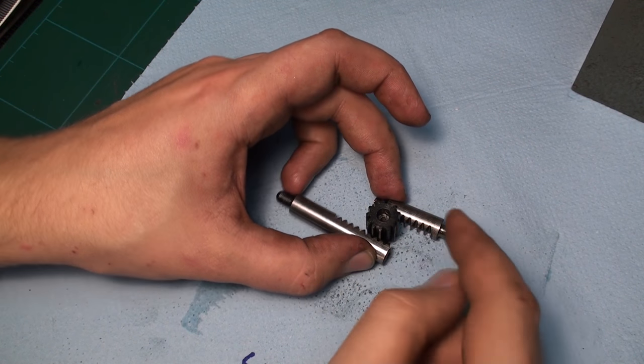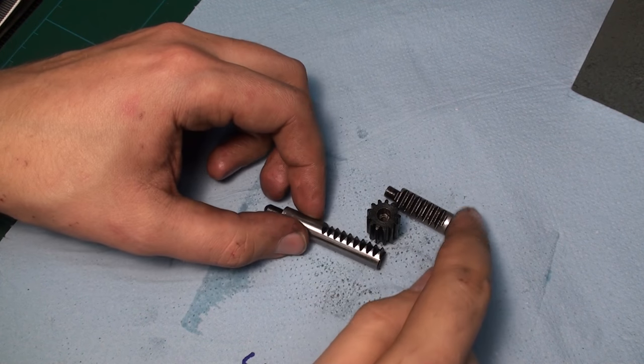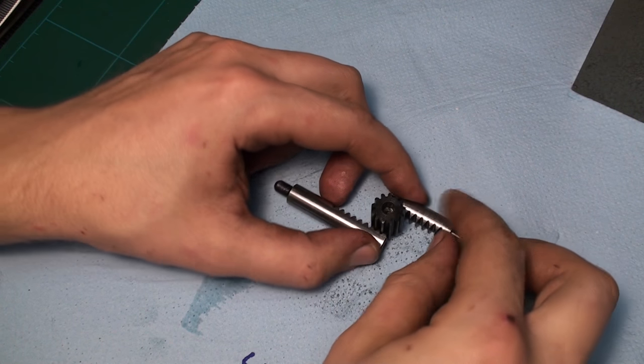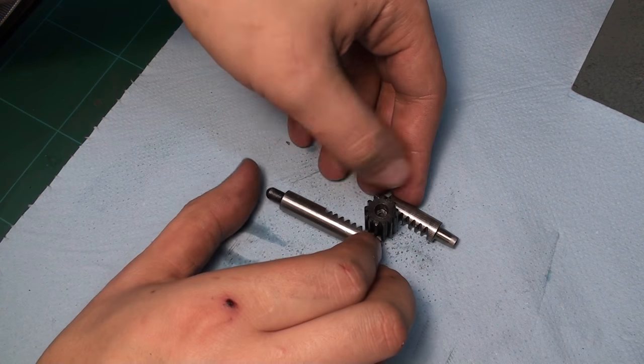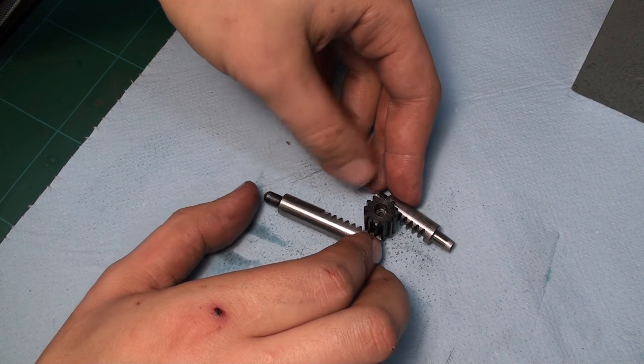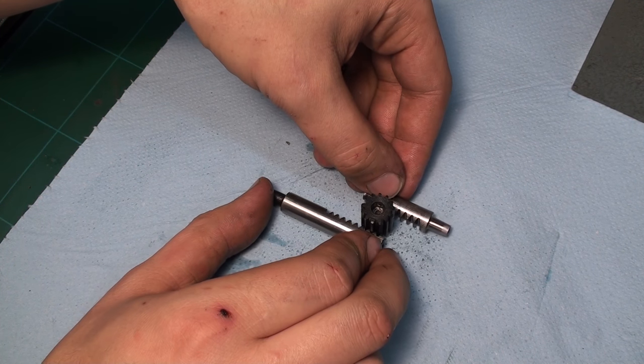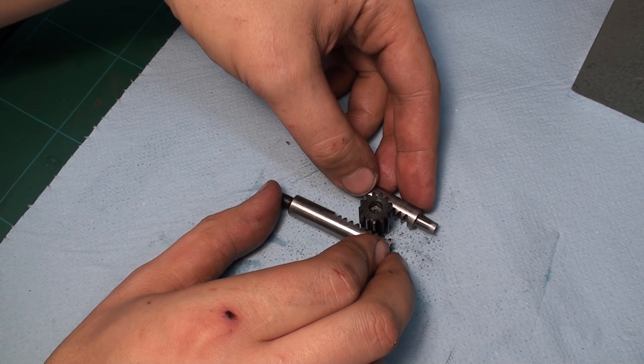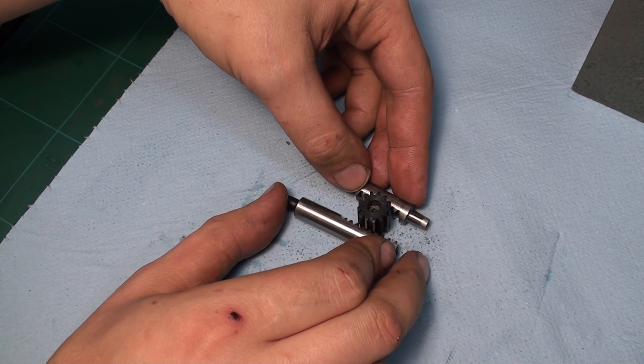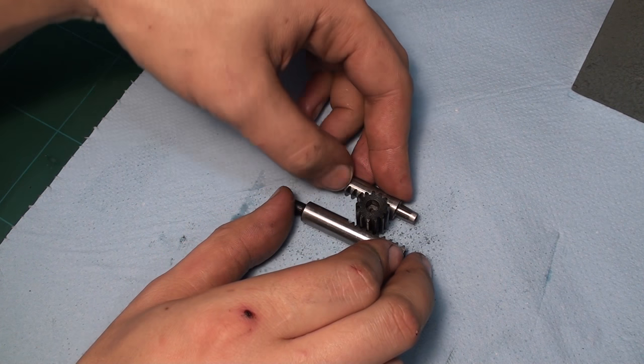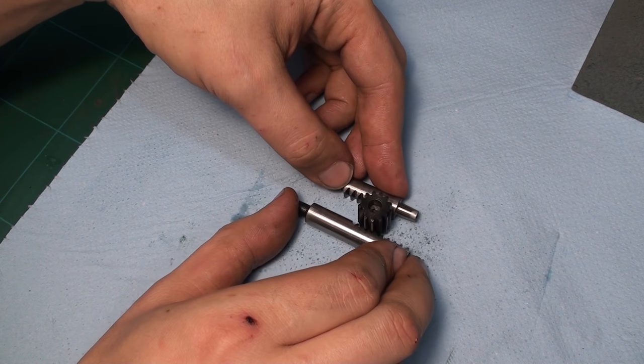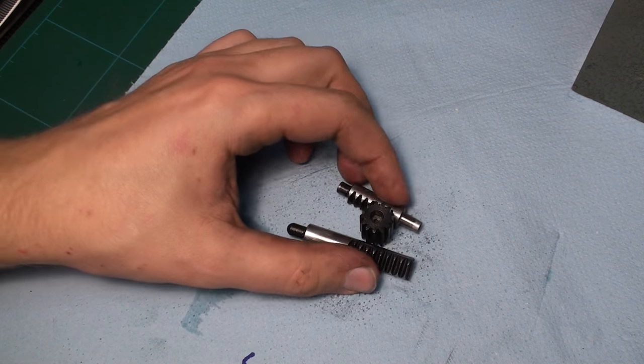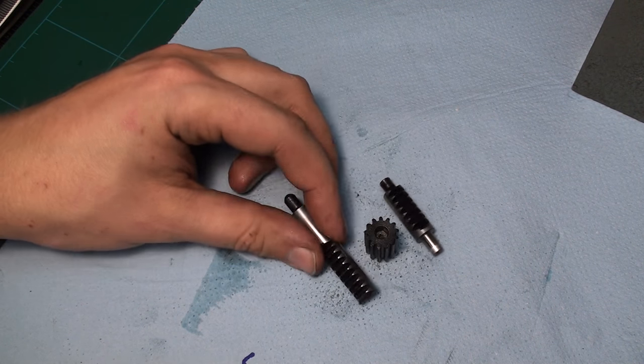And here we have, again, the indexing pin, the idler wheel, and the actuating pin for the indexing. And when the actuating pin, that's the lower one, moves in, and the idler wheel stays in place, the indexing pin moves back. So, that's a mechanical reversing. That's quite neat. I like it.